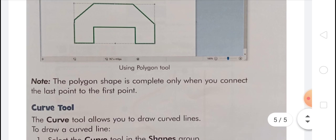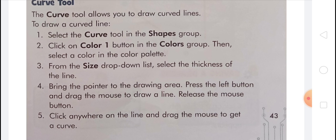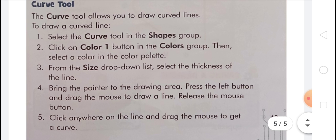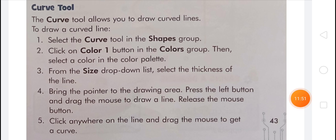The next topic is the curve tool. The curve tool allows you to draw a curve line. To draw a curve line: first, select the curve tool in the shapes group. Second, click on the color 1 button in the colors group, then select a color in the color palette. Third, from the size drop-down list, select the thickness of the line. Fourth, bring the pointer to the drawing area, press the left mouse button and drag the mouse to draw a line, then release the mouse button. Fifth, click anywhere on the line and drag the mouse to get a curve.